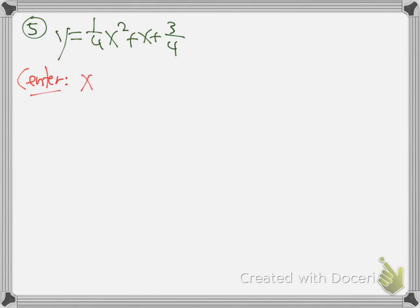Let me do one more of these. Let's do the same thing. Start off - what are we going to find first? The vertex, the center. What's our formula for finding the center? X equals negative b over 2a. That's right. So plug that in. So how are we doing on getting that? So it'd be negative b - b is just one - over 2a, where a is one-fourth.